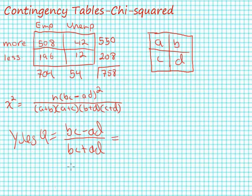we get 42 times 196 minus 508 times 12 over 42 times 196 plus 508 times 12.